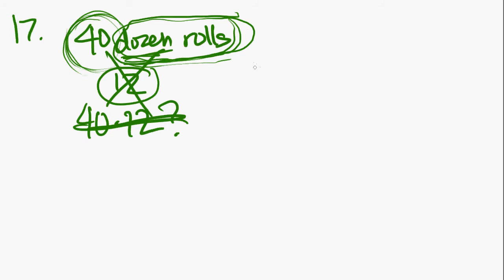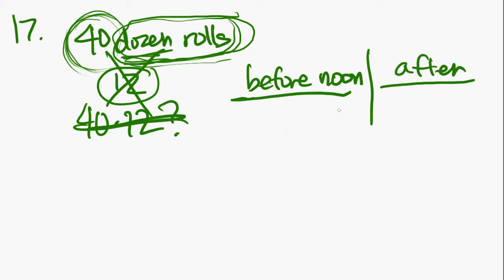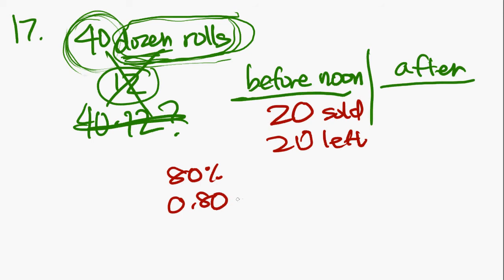Okay, it says you opened up the store with 40 dozen rolls. Half the rolls were sold by noon and 80% of the remaining rolls were sold between noon and closing time. So you got before noon and then you have after noon. So these are the two time periods that they're looking at. They're saying half the rolls were sold by noon. So half the rolls are sold by noon. Let me see here. Half of 40 is 20. So 20 were sold before noon. And how many are left over? 20 sold, 20 left. And they're saying that in the afternoon they sold, what did they sell? They sold 80% of the remaining rolls. So 80% which is 0.80 of the 20.